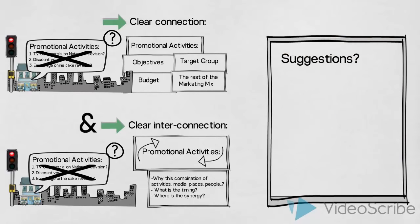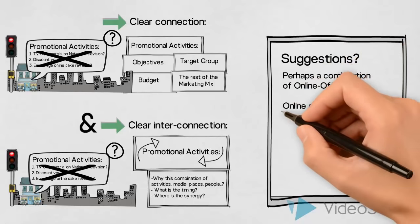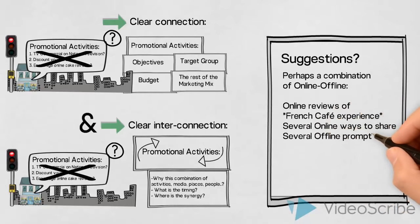So what might we suggest? One idea could be to encourage customers to review their French Cafe experience, not just the cakes. Depending on some research on the target group's media habits, a suitable online platform such as TripAdvisor or similar could be used. We could prompt customers to take part when visiting the cafe, by personal contact and by different types of print. We might also encourage them to post their review on selected social media platforms. In this way we would combine online and offline promotion, interacting with the target group in various situations, places and at various times, which increases the likely success of an integrated marketing campaign.